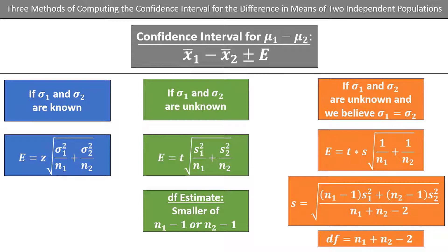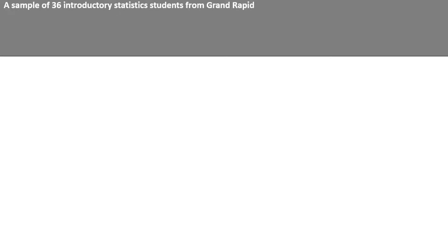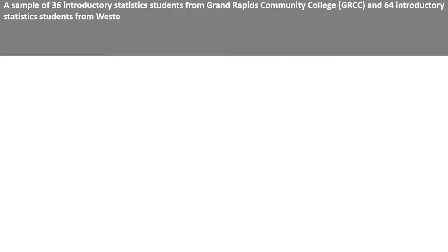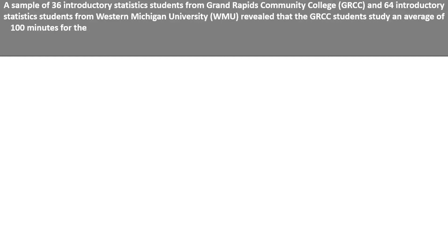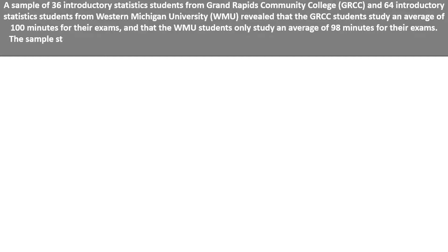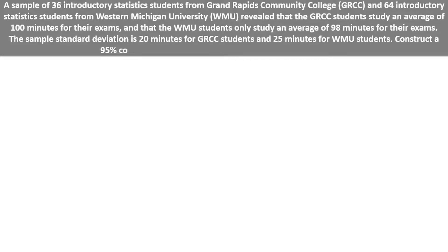Okay, let's look at some examples. In this example, we will read the information and write down the important numbers, then head to the TI-84 calculator to find the confidence interval. A sample of 36 introductory statistics students from Grand Rapids Community College and 64 introductory statistics students from Western Michigan University revealed that GRCC students study an average of 100 minutes for their exams and WMU students study an average of 98 minutes. The sample standard deviation is 20 minutes for GRCC students and 25 minutes for WMU students.